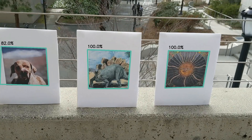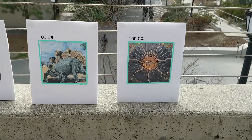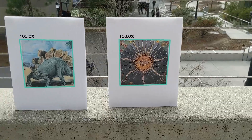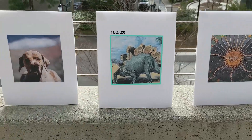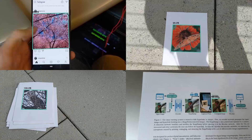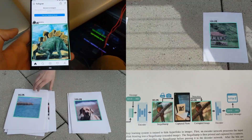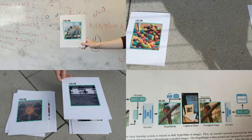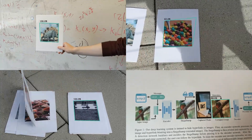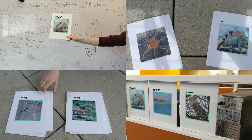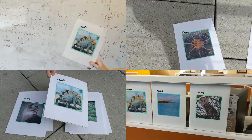We test our method in a variety of indoor and outdoor environments. The percentages correspond to the accuracy of decoding the 100-bit hidden message. Our method can recover multiple stamps in a single frame, and is robust to varying lighting conditions, oblique camera angles, motion blur, and small occlusions.